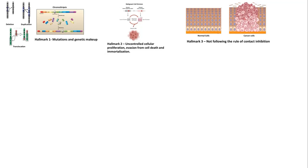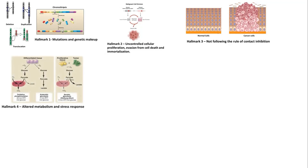Cancer cells decided they would not follow the rule of contact inhibition because they wanted to reach the pinnacle of tumor formation. But some problems started arising. To sustain this much higher rate of proliferation and tumor formation, cancer cells did not have enough building blocks. So they went to the school of mutation and abrupt cell signaling to learn how to tweak their metabolism their way — and they were again thriving.